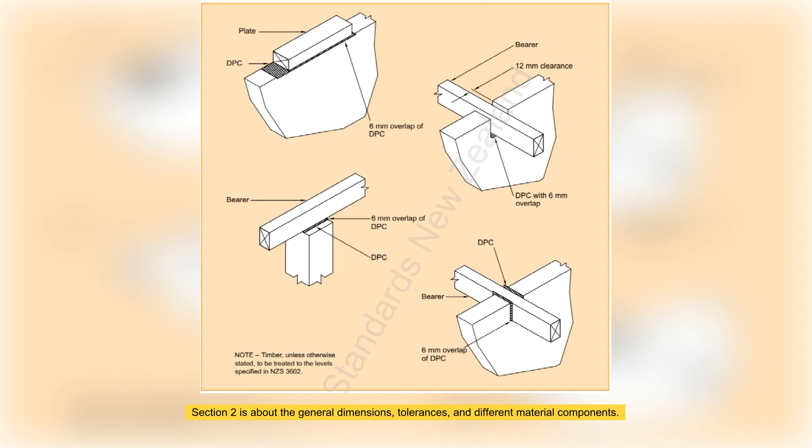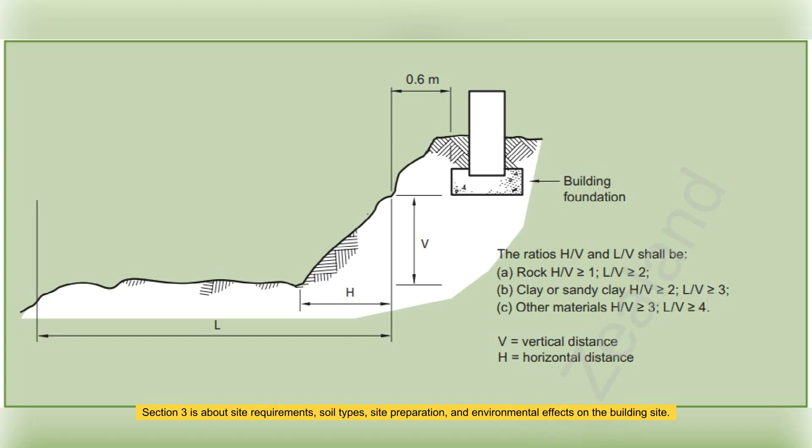Section 2 is about general dimensions, tolerances and different material components. Section 3 is about site requirements, soil types, site preparation and environmental effects on the building site.